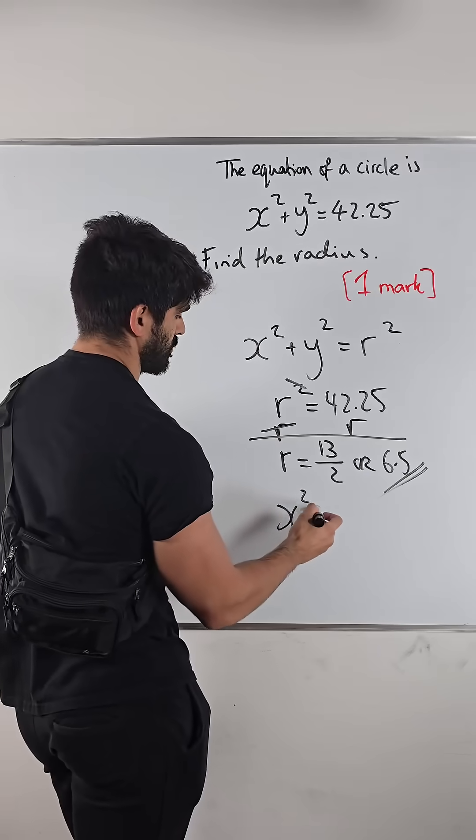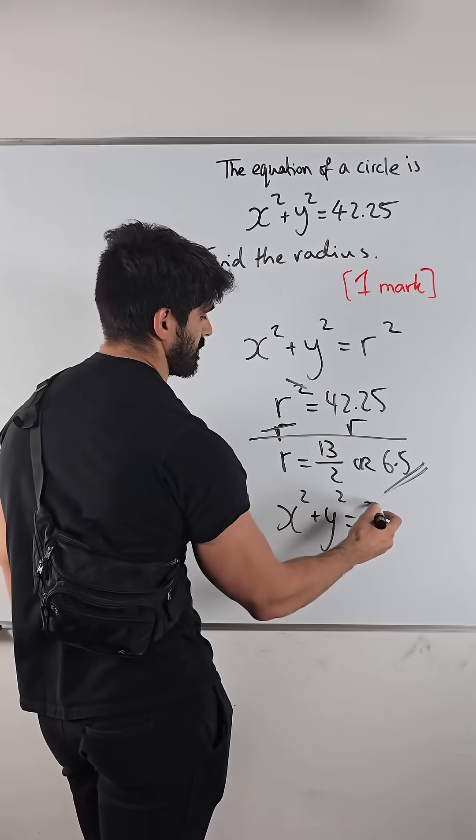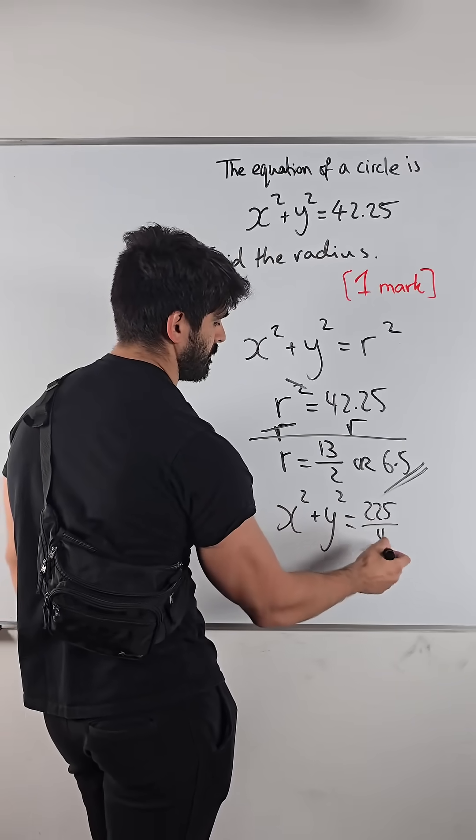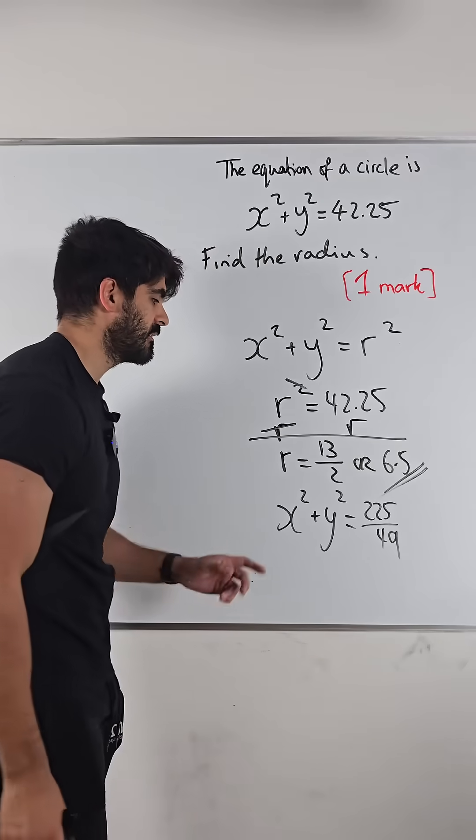So guys, if I had x squared plus y squared is, I'm just making this up on the spot. What would your radius be? Let me know.